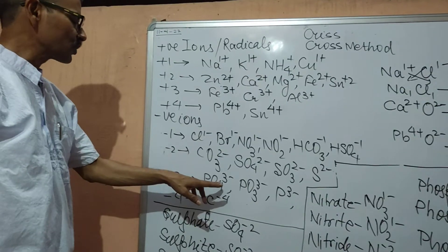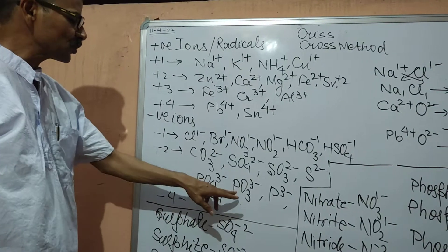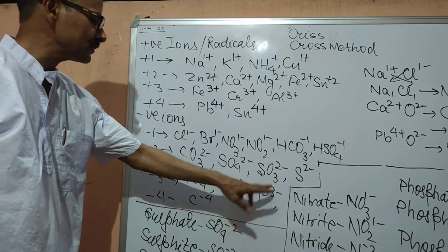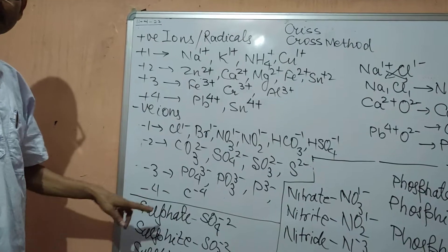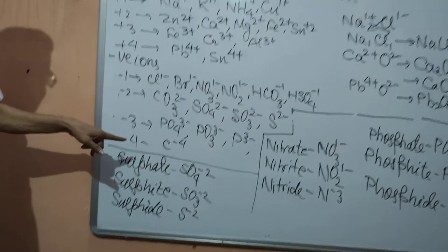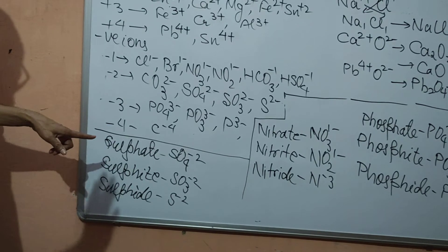Phosphate, PO4 3-. PO3 3-. And P 3-. Carbide which has 4 valency of negative ions. And that is your C 2-.